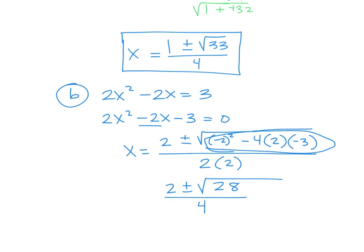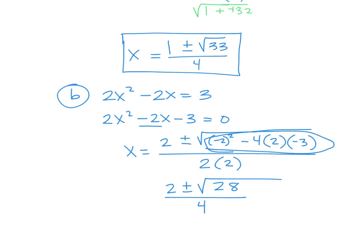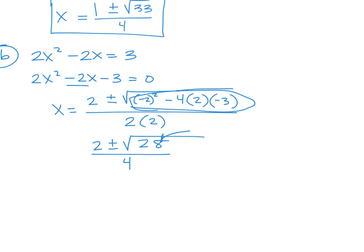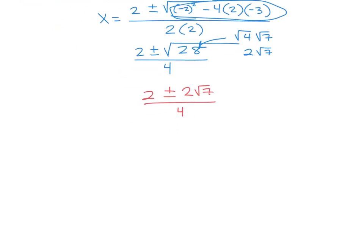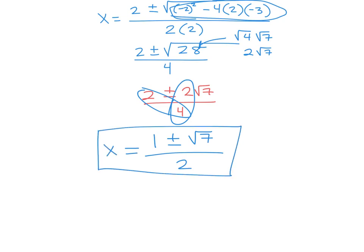The square root of 28 is not in simplest radical form. The perfect square that goes into 28 is four — so that's the square root of four times the square root of seven, or two radical seven. That means we actually have two plus or minus two radical seven over four. Do you see anything else you can simplify? The twos and the four — we can reduce all of that. Two over four reduces to one half, so it's going to be one plus or minus radical seven over two. That is your answer — two answers, the plus and the minus, in simplest radical form.